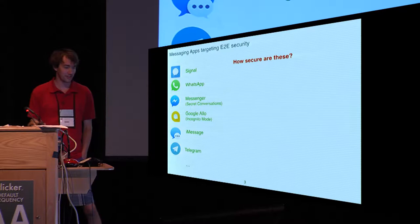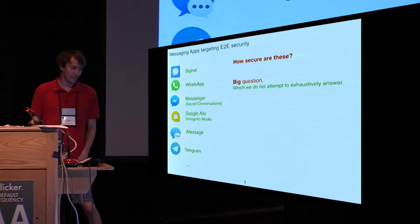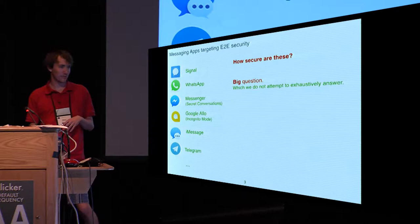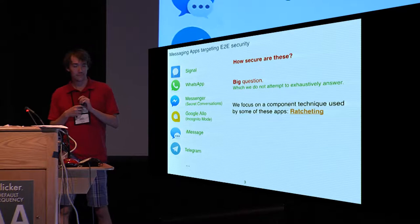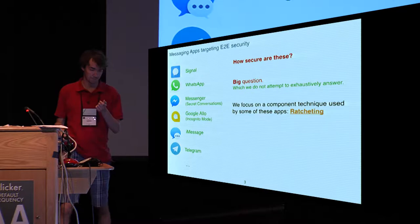So this leaves us with kind of an obvious question: How secure are these messaging apps? This is a big question. Answering it thoroughly would require really a systems-level perspective worrying about much more than just the crypto involved. We're not trying to exhaustively look at things. We're just going to look at the crypto. And in particular, we're looking at this one component technique used by some of these apps called ratcheting.